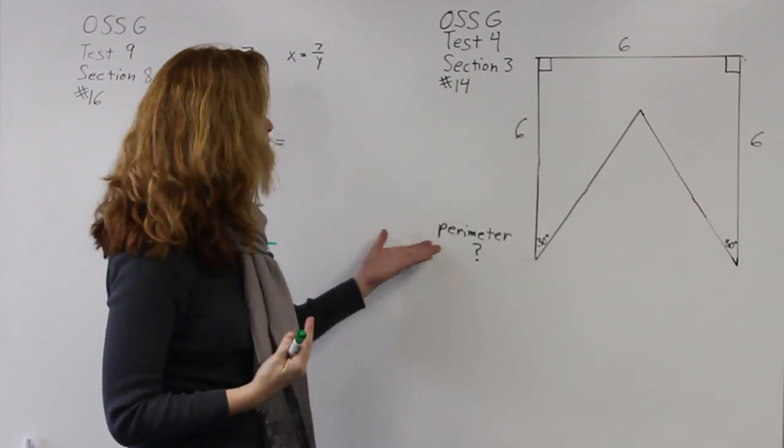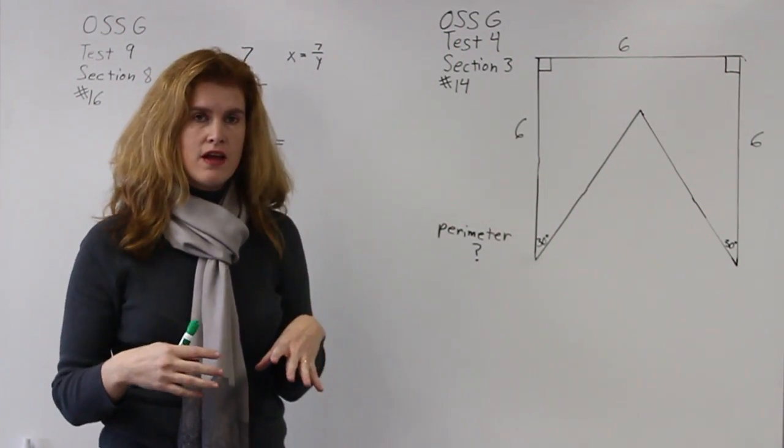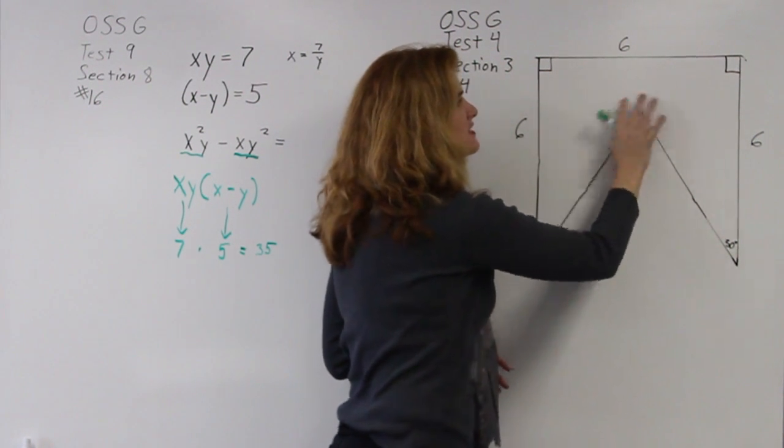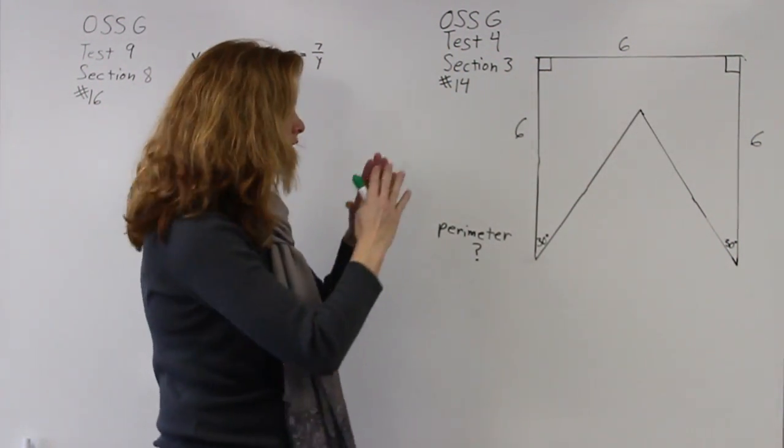A lot of times kids will see the word perimeter and they'll substitute area, which is the amount that's inside of the figure. So we're talking about the outside of the figure.